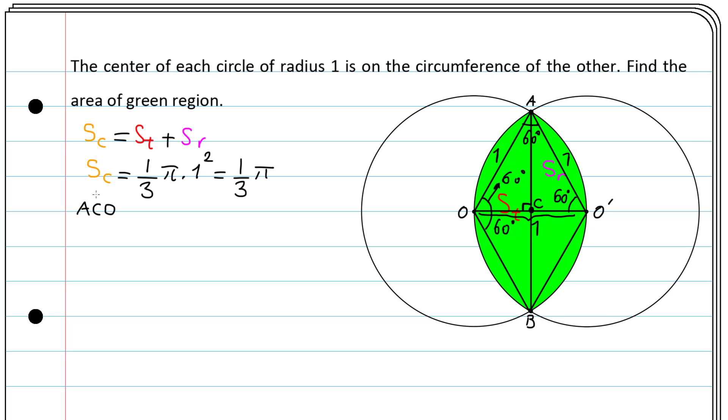So in triangle ACO, we have OA equals 1, OC equals one-half of OO', but OO' equals 1, so this is just one-half. And AC equals square root of OA squared minus OC squared, which is square root of 1 squared minus one-half squared. This gives square root of three-fourths, which equals square root of 3 divided by 2.